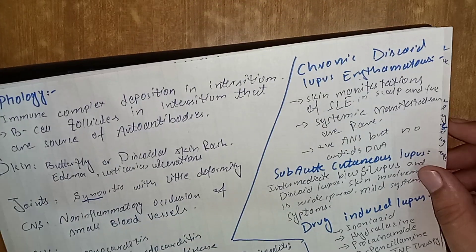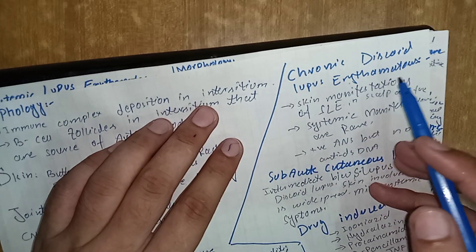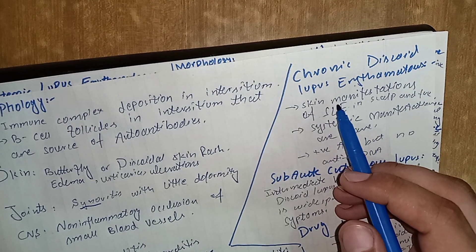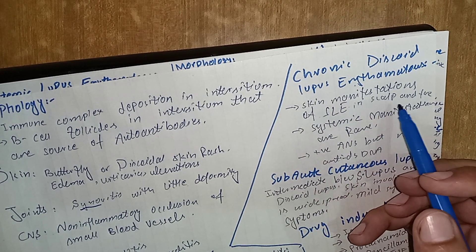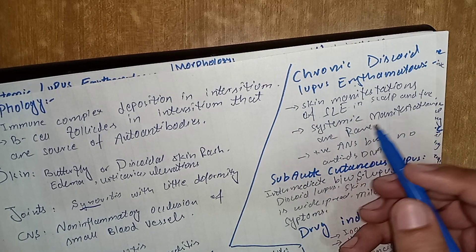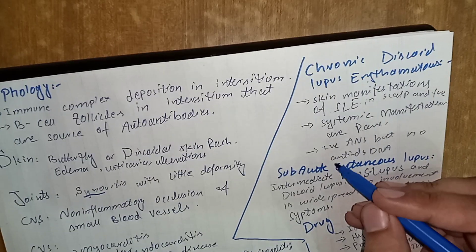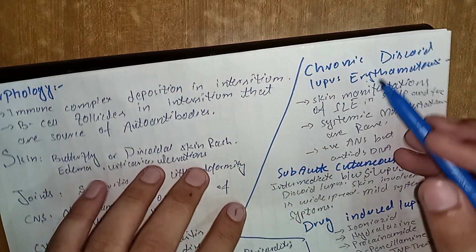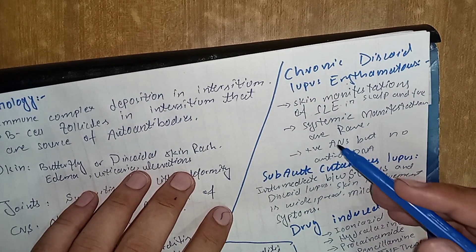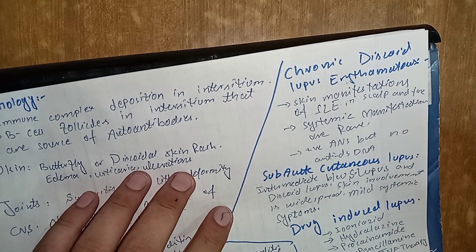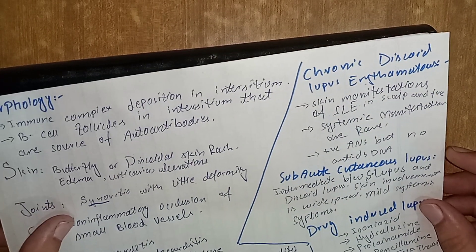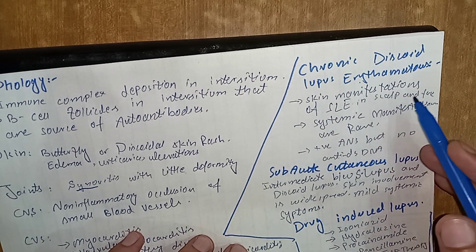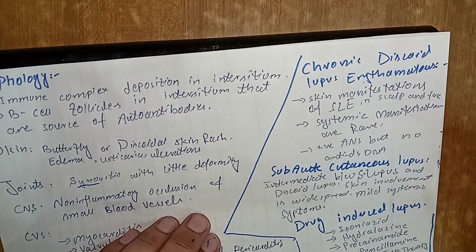There are two other variants of lupus. Chronic discoid lupus erythematosus shows skin manifestations on scalp and face but systemic manifestations are rare. ANA tests are positive but anti-double-stranded DNA test can be negative. In 5 to 10% of patients it can progress to SLE over many years.